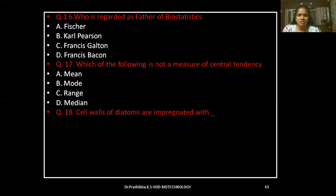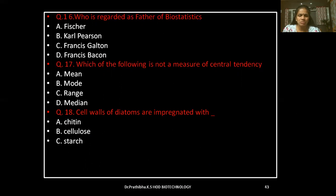Question 18: Cell walls of diatoms are impregnated with — chitin, cellulose, starch, or silica.